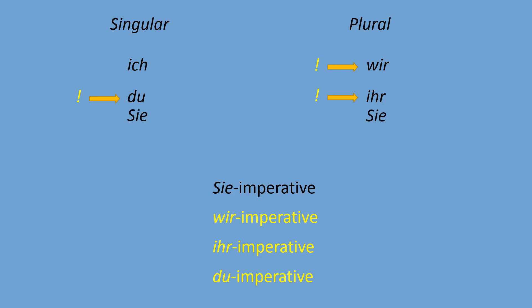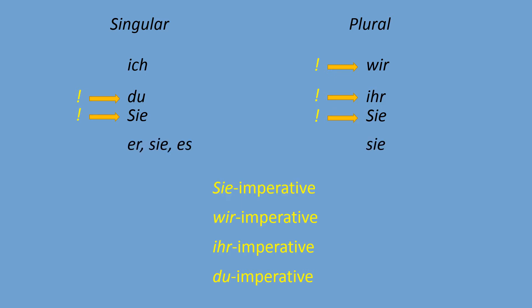The last option is formal language — 'sir,' 'ma'am,' 'ladies and gentlemen.' You can ask one person or many people: 'please do it, please come, please don't be so nervous.' We use capitalized 'Sie' when we write this request on paper, and we call it the Sie-imperative. It applies to both singular and plural in the same form.